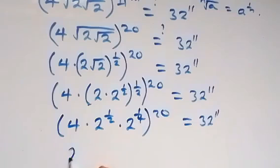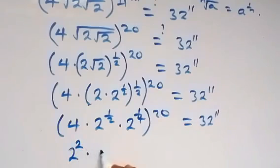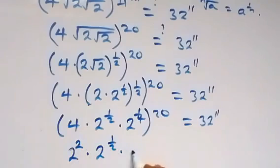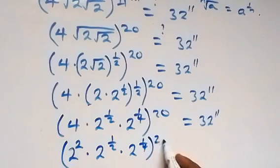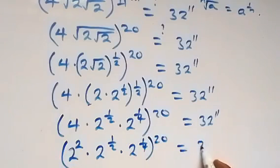Let's change this to base 2. So we have 2 raised to power 2, times 2 raised to power half, times 2 raised to power 1 over 4, all raised to power 20. Is this equal to 32 raised to power 11?